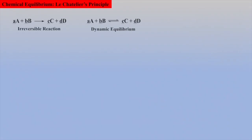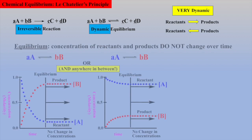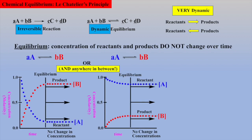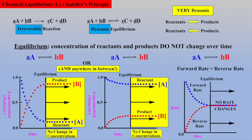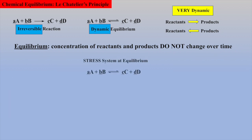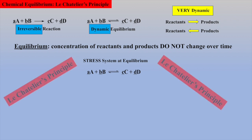In Part 1 of this video series, we learned that chemical reactions are either irreversible or dynamic equilibriums. Recall also that a reaction is said to be at equilibrium when the concentrations of reactants and products do not change over time, as demonstrated when plotting concentration-time data, or when the forward rate equals the reverse rate. If we stress the system at equilibrium, Le Chatelier's principle helps predict how the equilibrium will adjust to the stress.